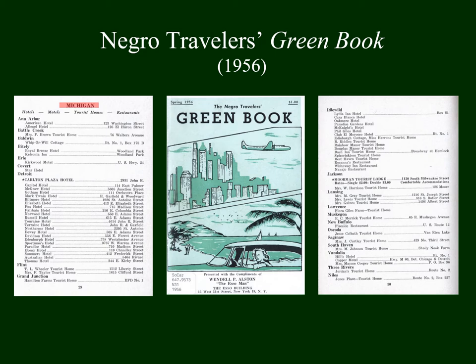Here we see one of the inside pages of the Green Book for the state of Michigan. Notice there are a handful of places in Ann Arbor and Battle Creek, several in Detroit, but then you get to Flint and Grand Junction — and on the right we see Idlewild, where there are numerous locations. Notably, there are none in Manistee, Ludington, or even a big city like Grand Rapids.